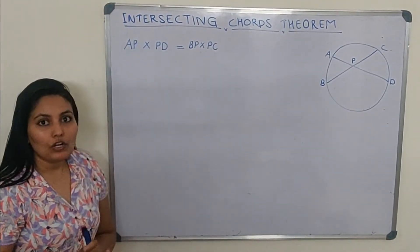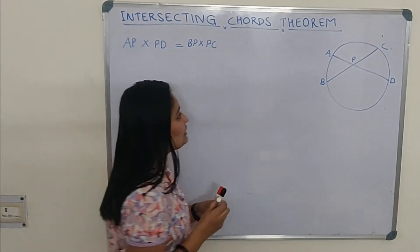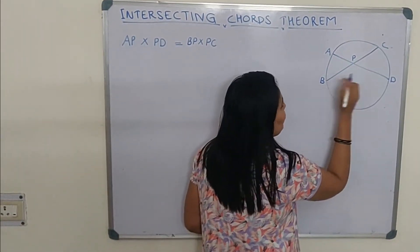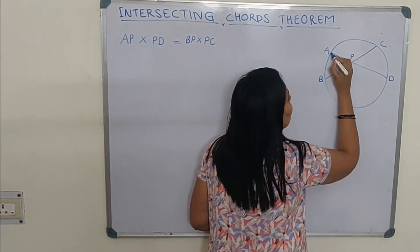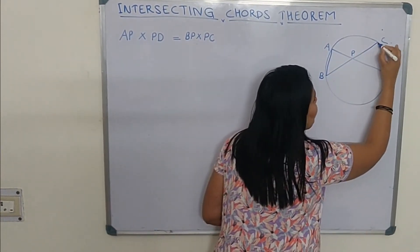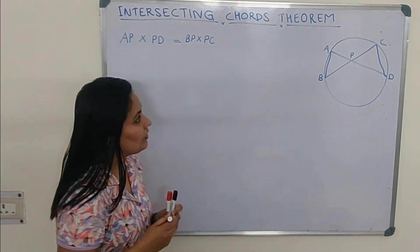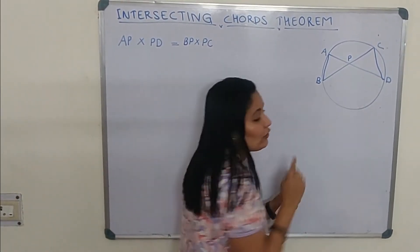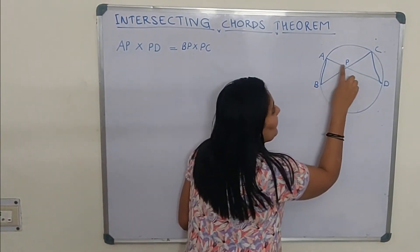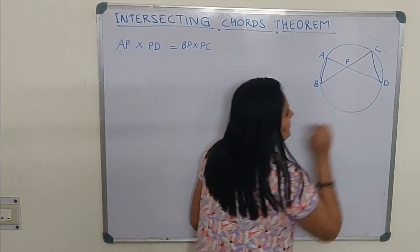Now we are going to prove this theorem. For that, first we are joining two points A to B and C to D. Look at this figure — now we got two triangles: triangle APB and triangle CPD.